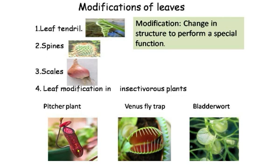In the Venus fly trap, there are two wings. When a fly goes inside, the wings close together and trap the fly. The fly is digested and the nutrients are taken by the plant. In the bladder wort, there are pouches. When an insect goes inside, the leaves secrete digestive juice and digest the insect. The bladders are very sticky so the insect cannot escape, and the nutrients are absorbed by the plant.